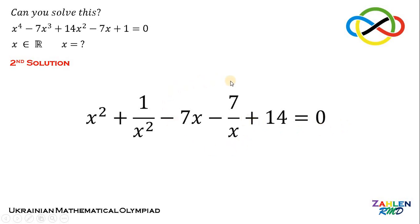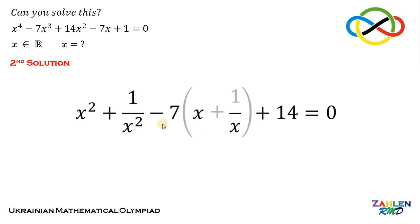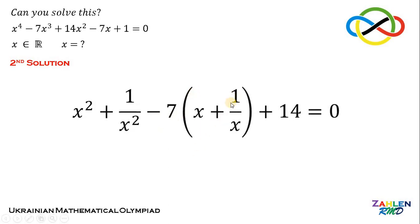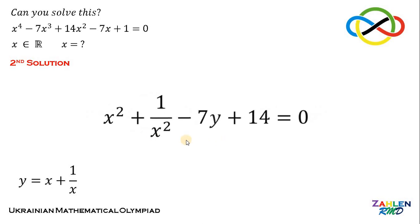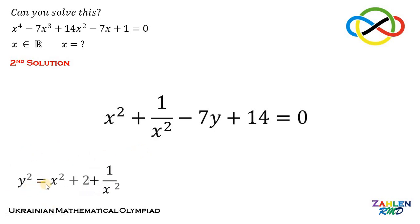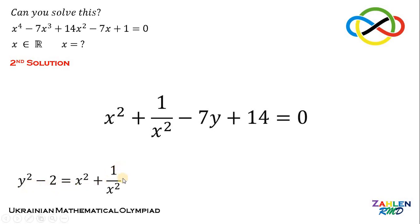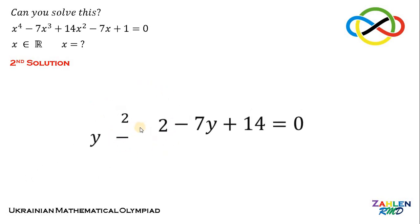Focusing on negative 7x minus 7 over x, factor out negative 7 to get negative 7 times (x plus 1 over x). Let y equal x plus 1 over x. Squaring both sides gives y squared equals x squared plus 2 plus 1 over x squared, so y squared minus 2 equals x squared plus 1 over x squared. Thus x squared plus 1 over x squared is y squared minus 2.